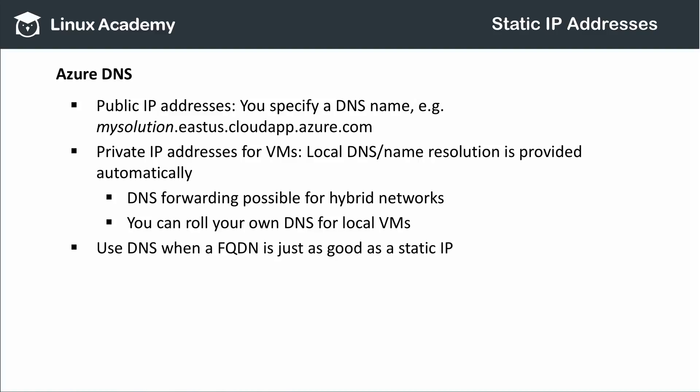Finally, we should talk about domains in the Azure DNS service. Whenever you create a resource available via a public IP address in Azure, you'll also specify a domain name server-eligible name for that service. For example, if you're assigning a public IP address to a load balancer in the East US region, you might name that load balancer MySolution. If you do, your load balancer would be reachable at the fully qualified domain name of MySolution.EastUS.CloudApp.Azure.com. So, if your need is not to have a specific IP address assigned to a service, but for your service to be addressable by some fixed means such as a domain name, then there's no need to assign a static public IP address to that resource — it already has a unique, fully qualified domain name that will not change for as long as the resource is provisioned.